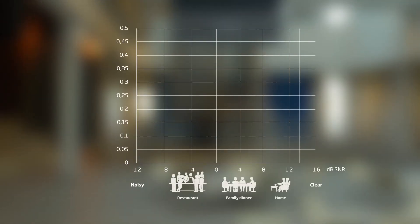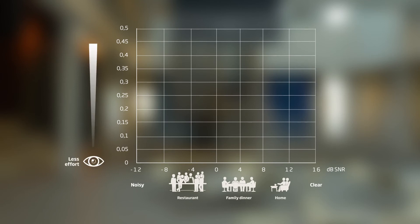So, let's go back to the graph showing the different listening environments. Now, the y-axis represents pupil dilation or cognitive load. The more dilated the pupil is, the more effort is put into understanding the speech.